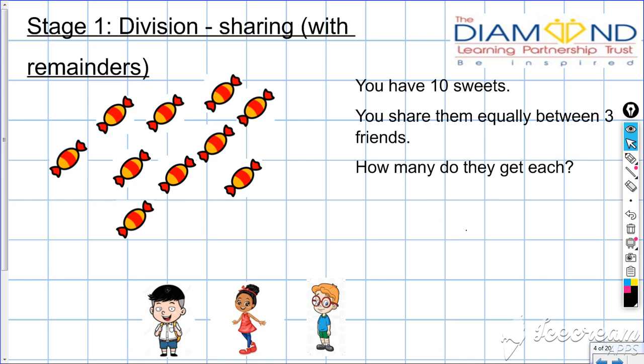For instance, our sweets. We have ten sweets and we're sharing them between three people. How many sweets are they going to get altogether? How many are they going to get each?